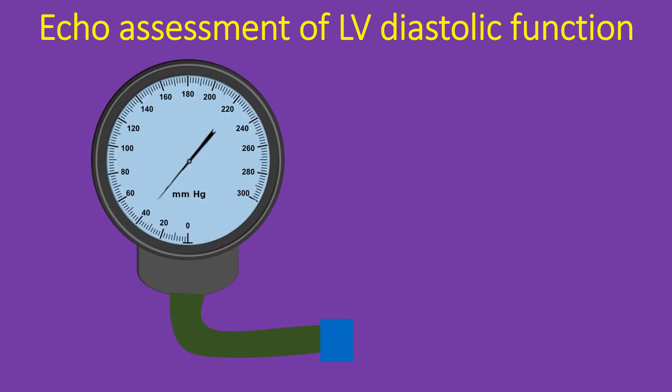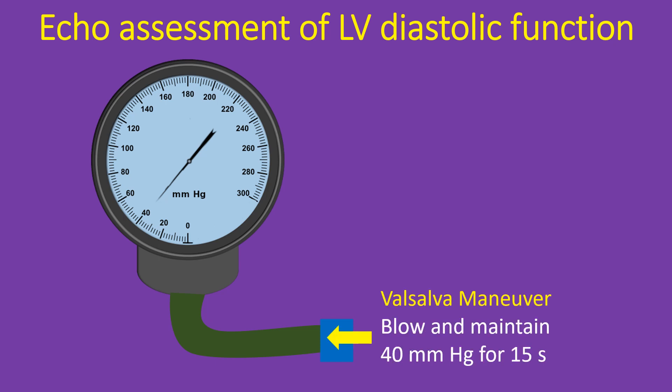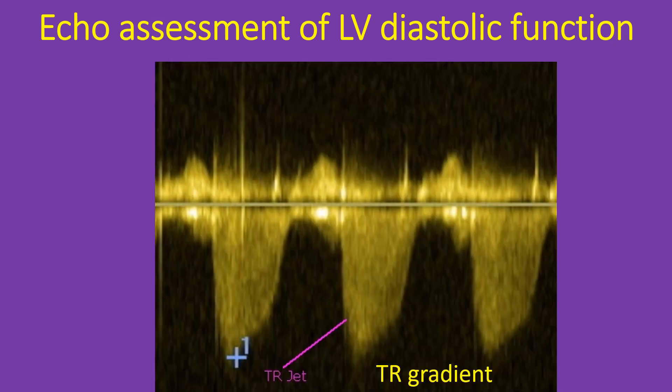Some of the other useful parameters are Mitral E velocity deceleration time, changes in Mitral inflow with Valsalva maneuver, Mitral L velocity, isovolumic relaxation time, left atrial maximum volume index, pulmonary vein systolic to diastolic velocity ratio, and Mitral Colour M mode Vp and E by Vp ratio. Tricuspid regurgitation jet velocity and pulmonary regurgitation end-diastolic velocity indicating pulmonary hypertension are also taken as surrogates of left atrial pressure in the absence of pulmonary disease.